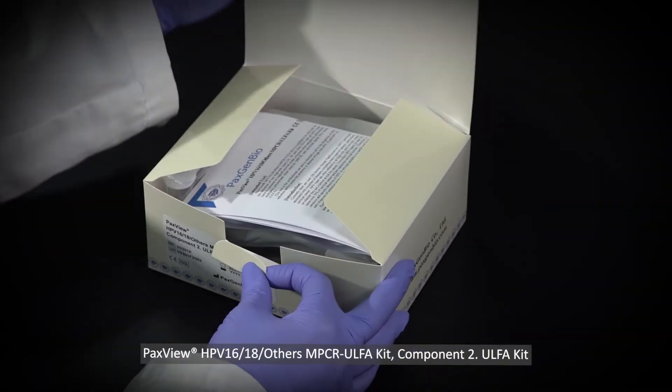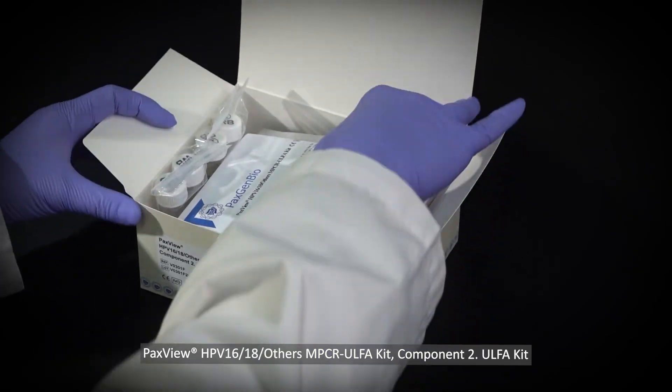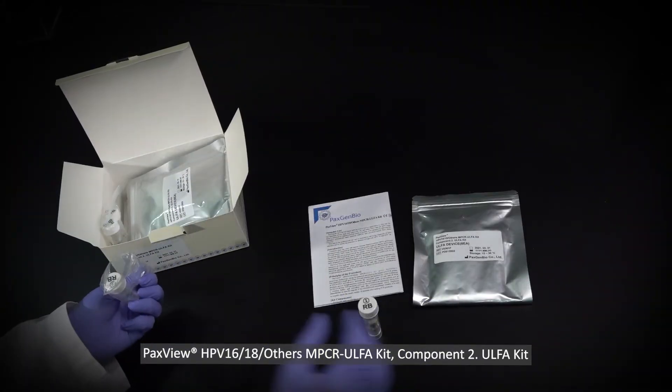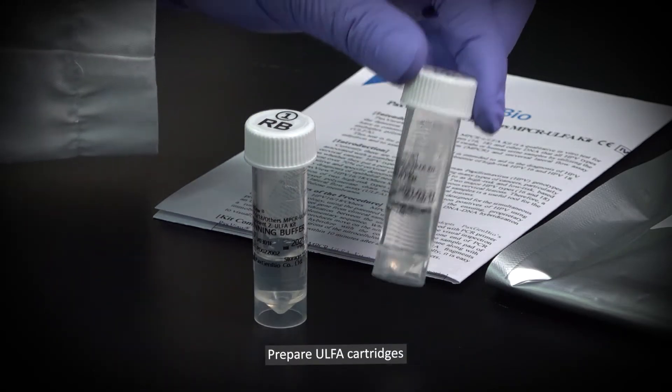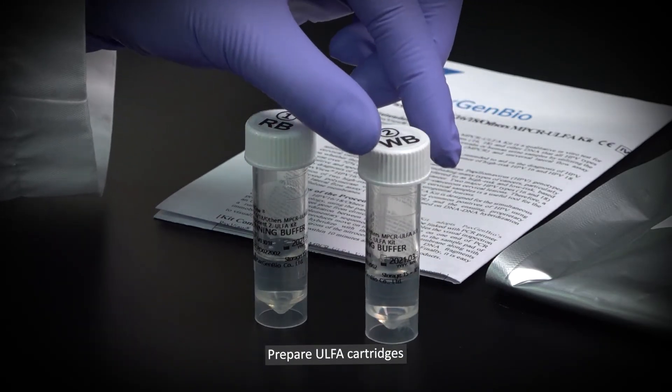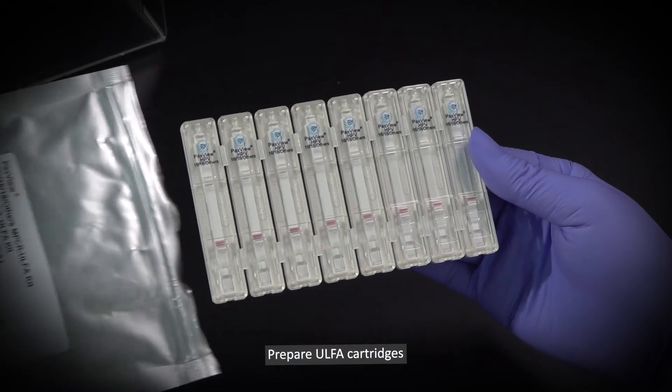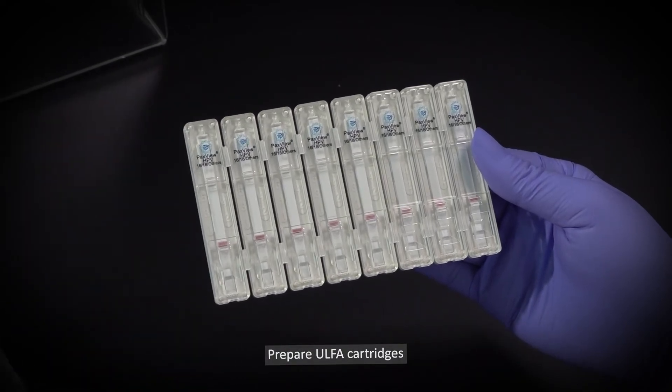The next step is detection of PCR amplification with the Alpha Kit. Alpha cartridges are taken out of the silver pouch bag.